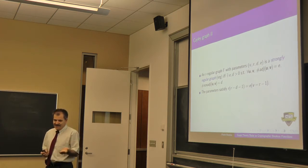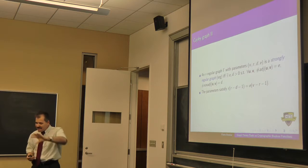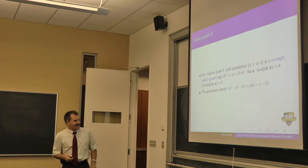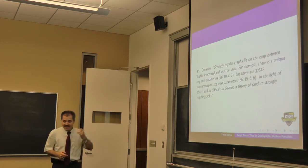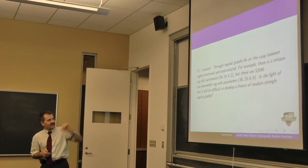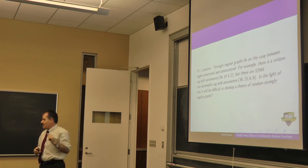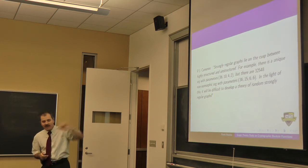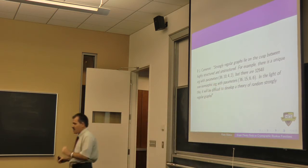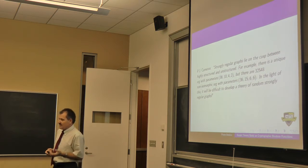When you see that equation, you say: there can't be that many strongly regular graphs — too much structure. Remember the crypto principle: if you have too much structure, it's not random, so you need a balance. Interestingly, strongly regular graphs 'lie on the cusp between highly structured and unstructured.' One can have a unique SRG for some parameters, and more than 32,000 non-isomorphic graphs for other parameters with the same number of vertices — like chaos theory.